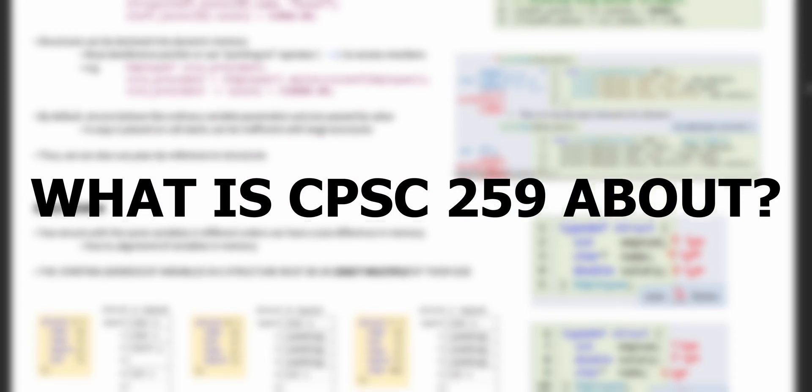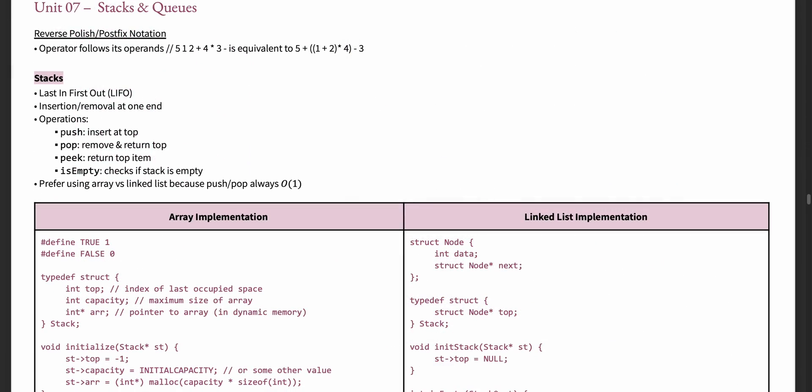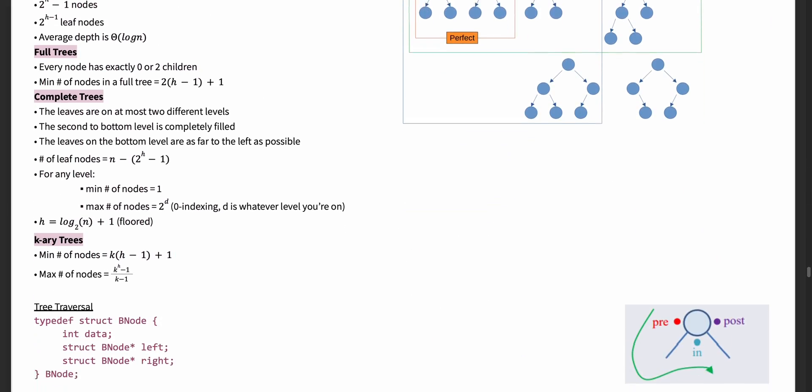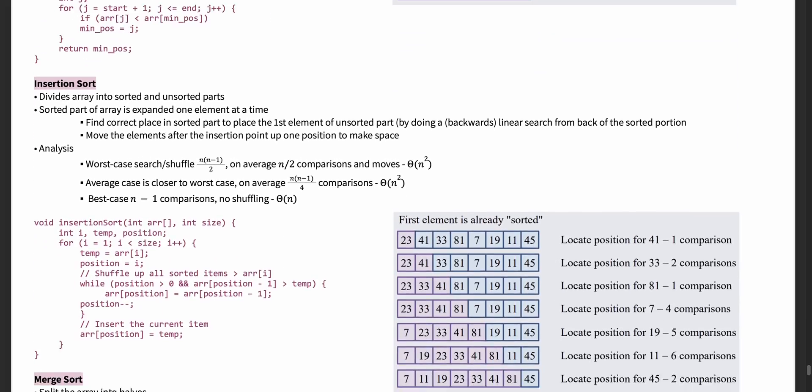So what is CompSci 259 all about? In this course you'll be learning about data structures and algorithms for electrical engineering students, expanding on the C programming knowledge that you've accumulated from AppSci 160 from first year. You'll learn about how to use different data structures such as linked lists, stacks and queues, trees and hash tables, and about different sorting and searching algorithms and their respective efficiencies. This course heavily relies on your C programming knowledge from AppSci 160, so I'd recommend brushing up on some of that before you head into this course.